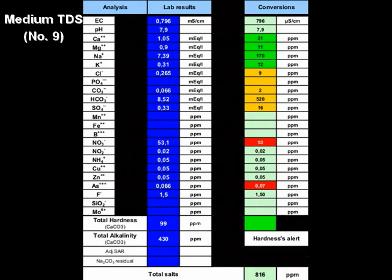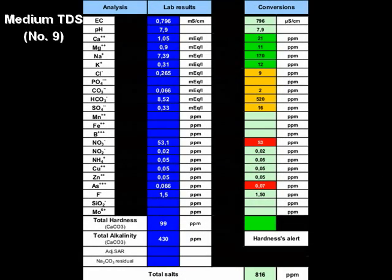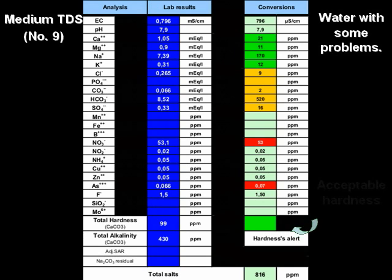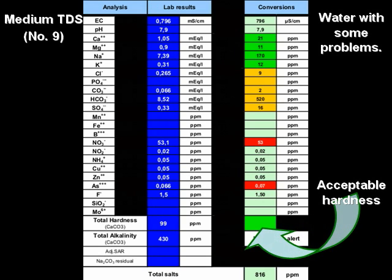The water in column number nine presents other characteristics, containing more and also different dissolved solids. In spite of the fact that the hardness is still in suitable range, the amount of solids dissolved in it is practically two and a half times that of the previous water discussed.